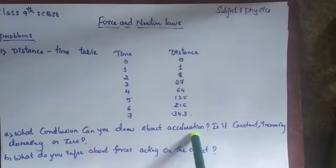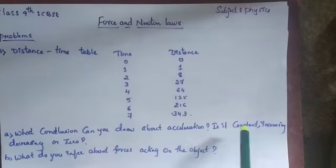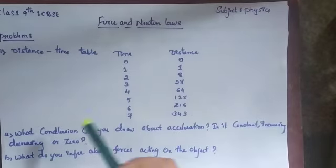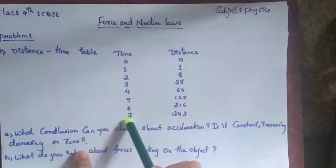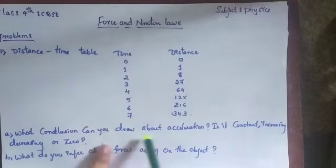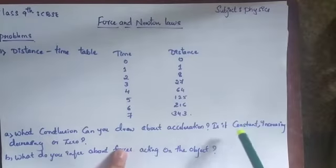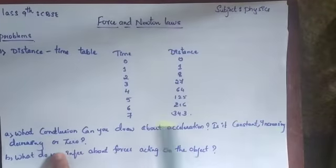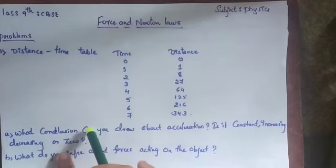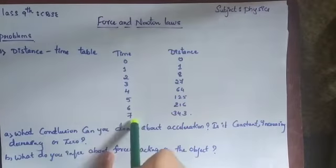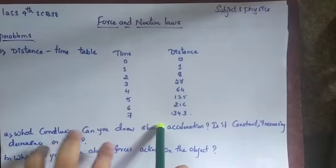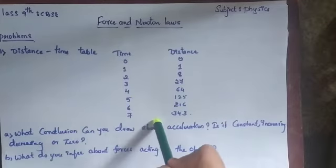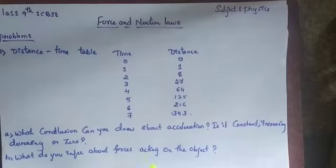By looking at this table, you have to conclude: what can you say about the acceleration? Is it constant, increasing, decreasing, or zero? After finding the acceleration, you also have to conclude about the force acting on the object.